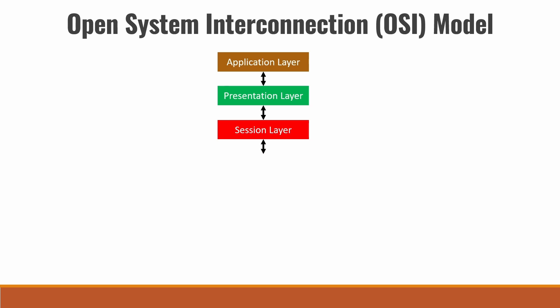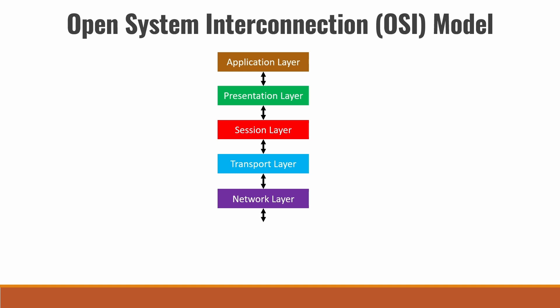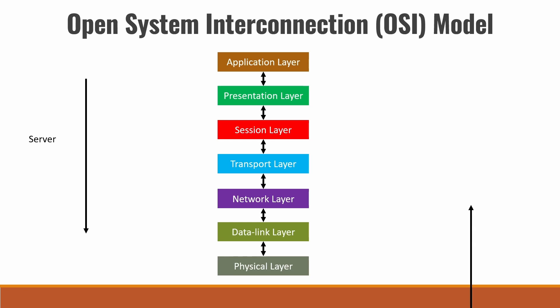From the session layer, packets go to the transport layer, where details regarding the communication protocol such as TCP or UDP are added. From the transport layer, data goes to the network layer, where IP and port details are appended. From the network layer it goes to the data link layer, where the physical address of the device is added onto the packets. From there it goes to the physical layer, which is the physical communication channel between devices. Data packets flow from the application layer to the physical layer in the case of a server, and from the physical layer to the application layer in the case of a client.